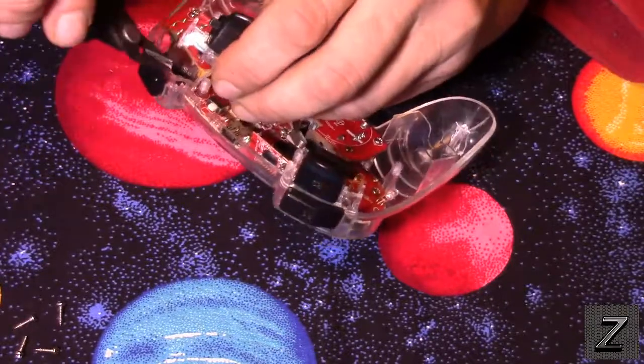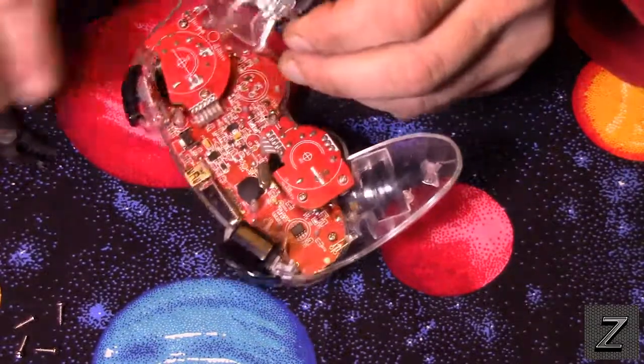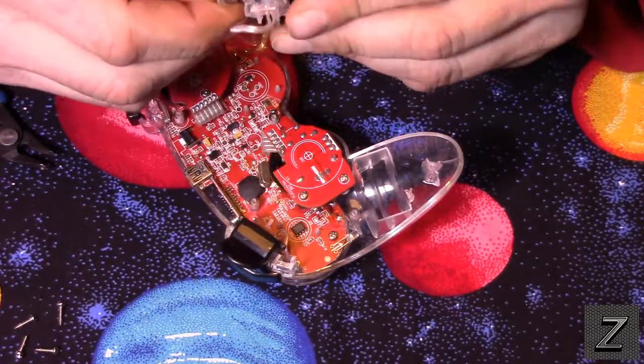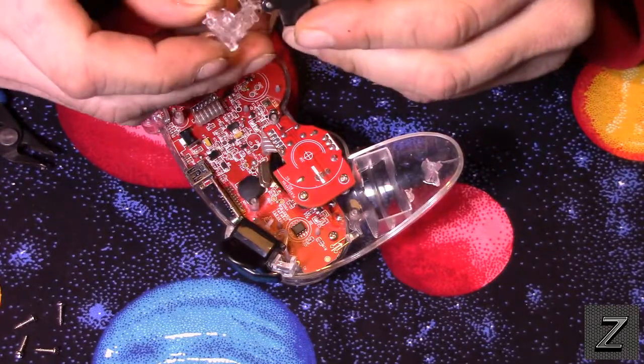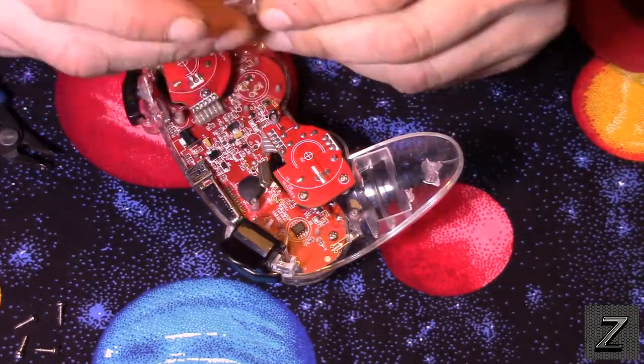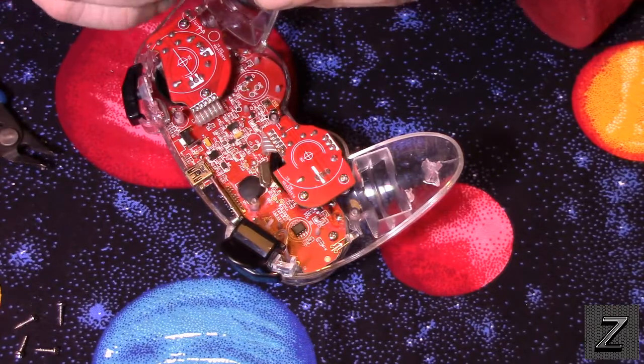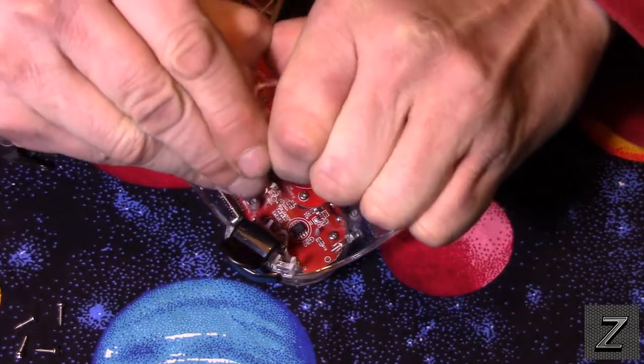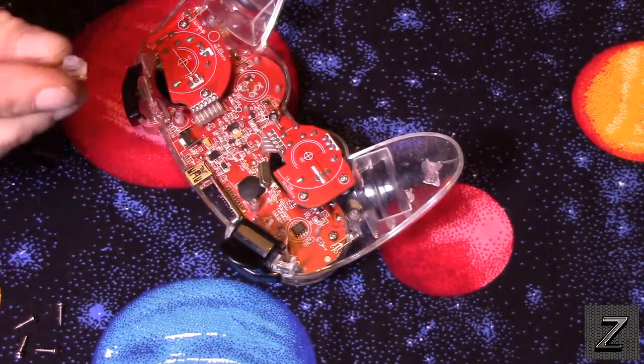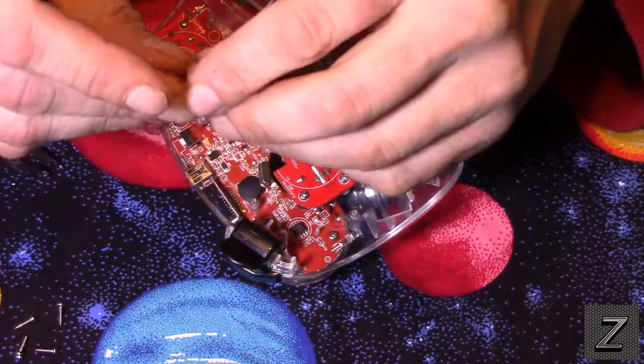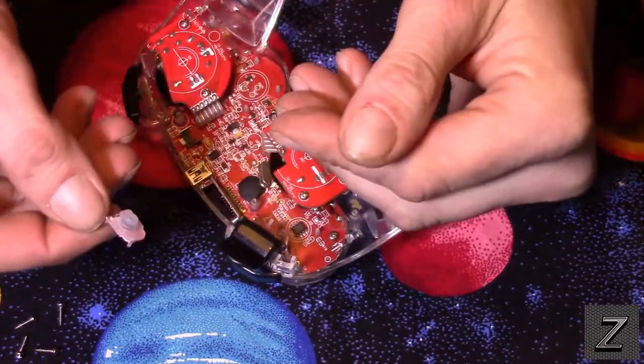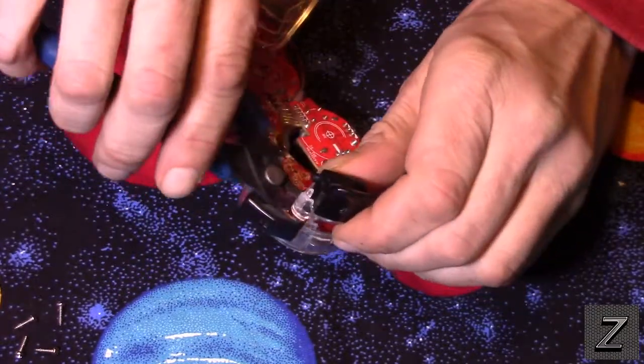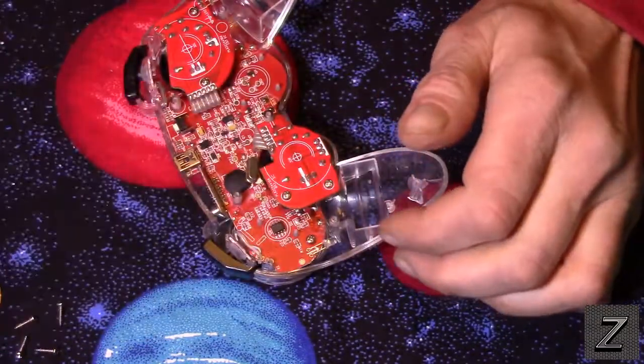Now next cut this out. I've gotten some of these before and I've saved them. A little bit of work. There we go. Get it apart. There we go. We got ourselves a little push button. Always useful for some project. There's two of them in here. There we go. I'll take that one apart later.